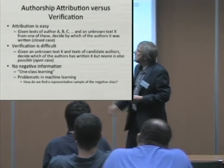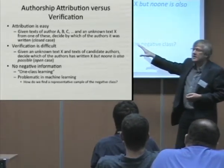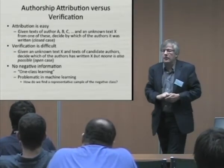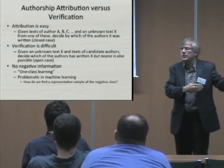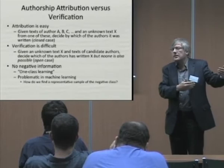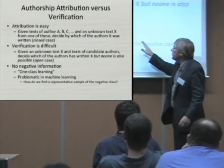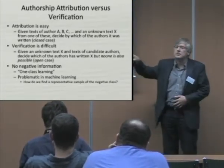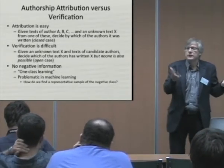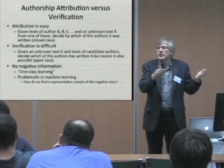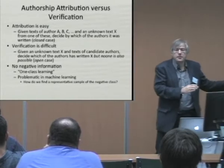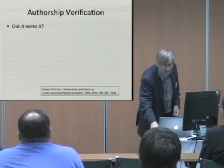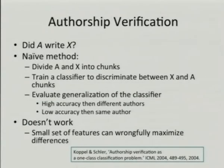The problem is how do we find the representative sample of the negative class? Not the way people have been doing it in stylometry, where you just have a set of authors — the set of negative authors is too small or not representative enough of all possible negative cases. Authorship verification is actually a paper that has not had a lot of follow-up yet, even though it's rather old. This group in Israel — Koppel and Schler — devised a system for authorship verification.